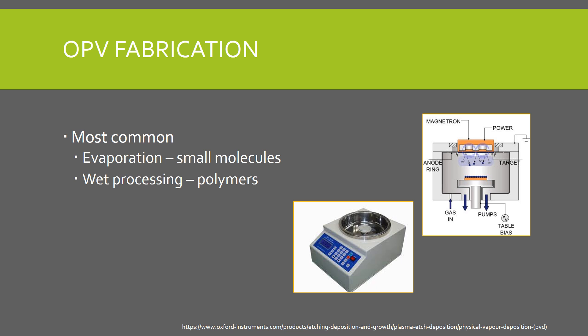In wet processing, the target material is dissolved in an appropriate solvent, which can be a polar or non-polar organic solvent or water. Then a variety of techniques can be used to deposit the material on a substrate, like spin coating, screen printing, and inkjet printing.